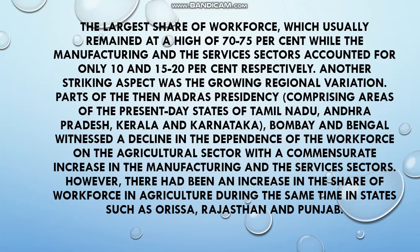The occupational structure data shows how many percent of people were in the primary, secondary, and tertiary sectors in India. In areas like Tamil Nadu, Andhra Pradesh, Kerala, Karnataka, Bombay, and Bengal, data about the workforce and labor force has been given. Details for Rajasthan and Odisha are also covered.